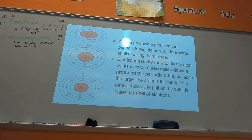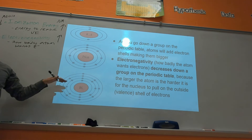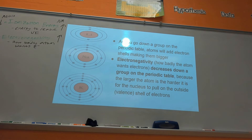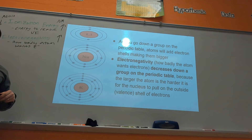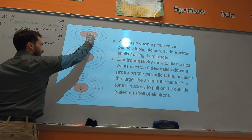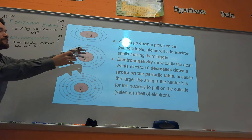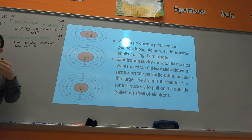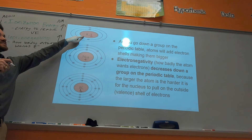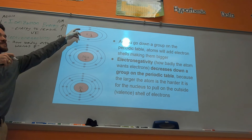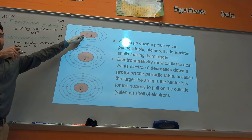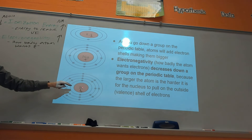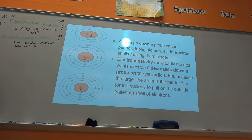As you go down on the periodic table, electronegativity decreases. From lithium down to potassium, elements want electrons less. The reason: the nucleus has a positive charge from its protons, and it's trying to pull the electrons inward. For a small atom like lithium, the nucleus can pull those valence electrons in more easily. But for a bigger atom like potassium, the more energy levels you add, the harder it is for the nucleus to pull on those outer electrons.